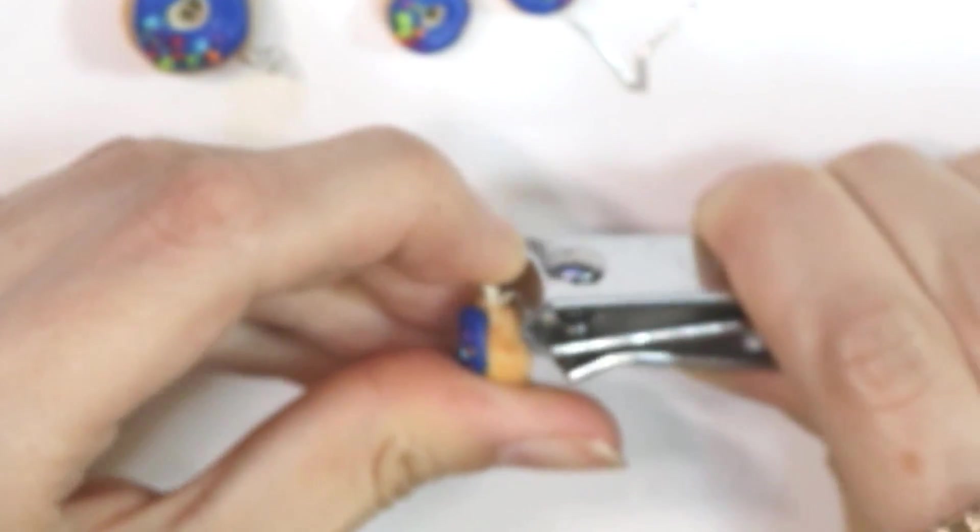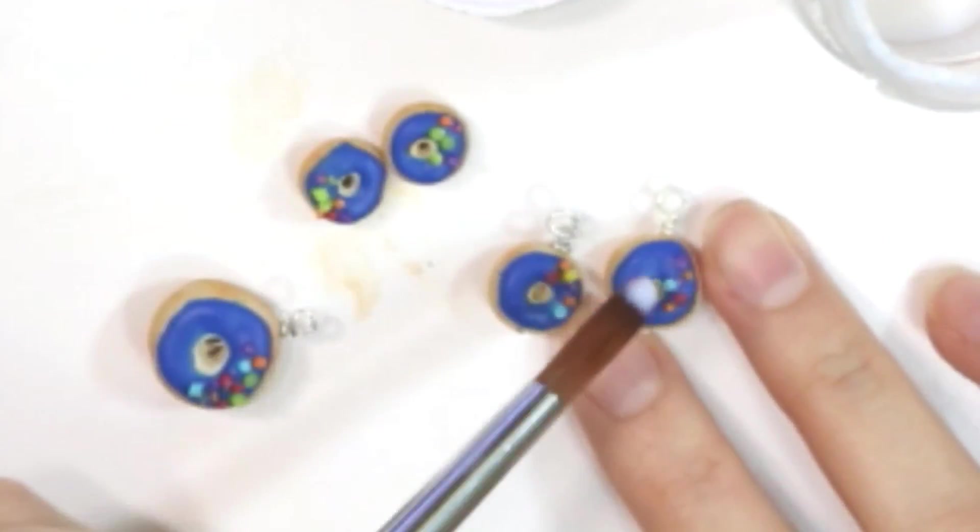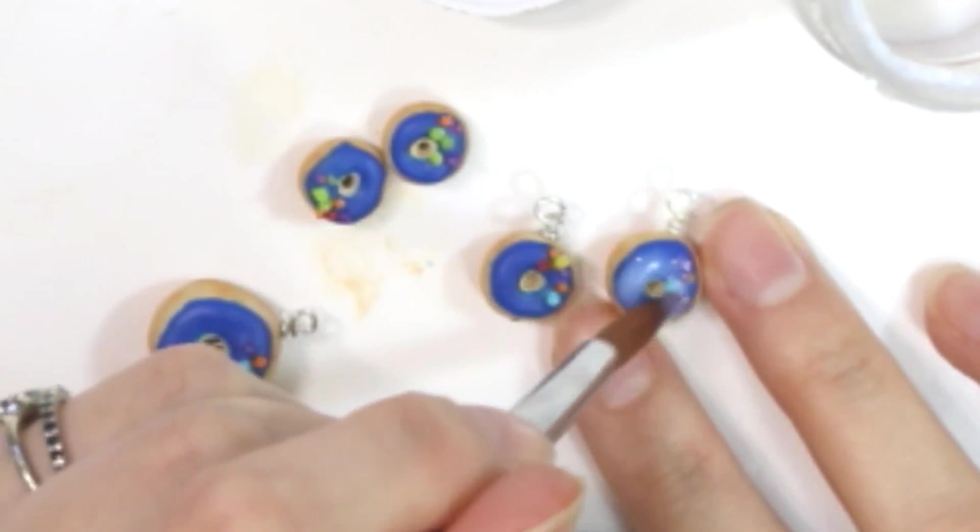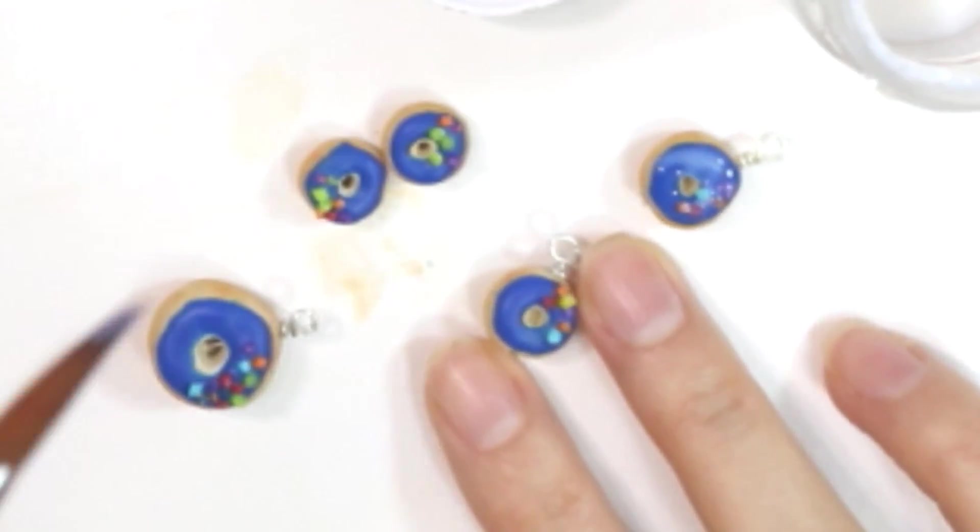Once you've cut all those off, now is the time to make these into jewelry. We're going to be using the findings from BB Crafts. First we're going to be adding on some gloss just to the top where the icing is to give this a little bit of a sheen like it's a real donut. I am using Sculpey Gloss.